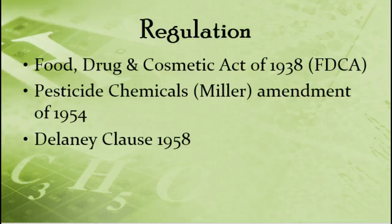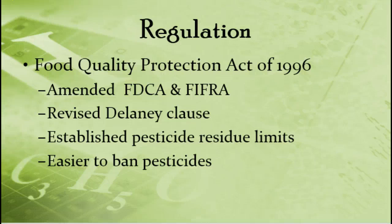The Delaney Clause wasn't without limitations — it only applied to processed foods, not raw produce or meat, and only to pesticides registered after the clause took effect. At the time it was passed, we didn't have great technology for detecting these chemicals, so we could only find really high levels. As technology progressed and we learned more, we came up with a new act that amended both previous laws: the Food Quality Protection Act of 1996.